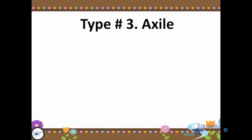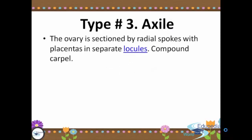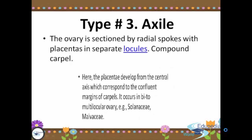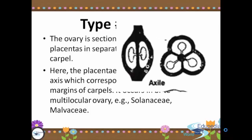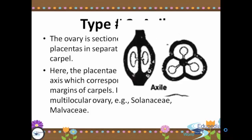The third type is axial placentation. The ovary is sectioned by radial spokes with the placentas in separate locules and compound carpal. The placenta develops from the central axis, which corresponds to the confluent margins of carpals. It occurs in bilocular or multilocular ovary, such as Solanaceae and Malvaceae. Here we have the picture of axial placentation.